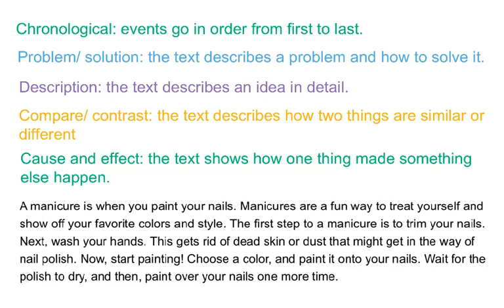The first step to a manicure is to trim your nails. Next, wash your hands. This gets rid of dead skin or dust that might get in the way of nail polish. Now, start painting. Choose a color and paint it onto your nails. Wait for the polish to dry and then paint over your nails one more time.